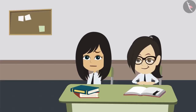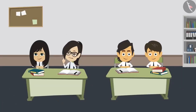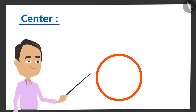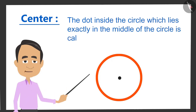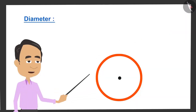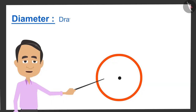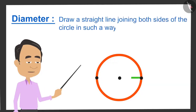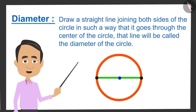Now that the students know the definition of a circle, the teacher explains its properties. The first property is the center — the dot inside the circle which lies exactly in the middle is called the center, and all circles have only one center. The second property is the diameter — a straight line joining both sides of the circle that passes through the center is called the diameter.